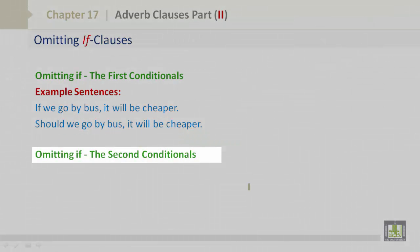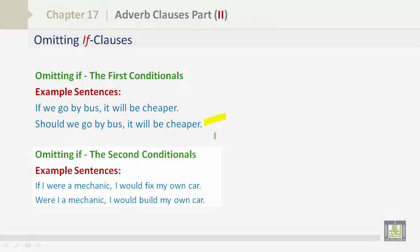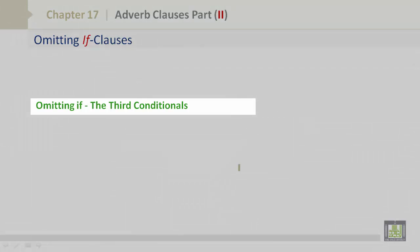Omitting if: the second conditionals. Example sentences: If I were a mechanic, I would fix my own car. Were I a mechanic, I would build my own car. We can see in these examples, if is omitted. Please pause your screen and understand. Omitting if: the third conditionals.